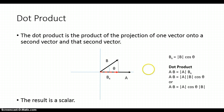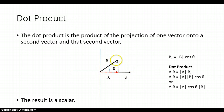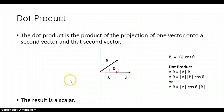Expanding on our equation for the dot product, the dot product of a and b equals the magnitude of a times the magnitude of b cosine of theta. Or we may also write it as the magnitude of a cosine of theta times the magnitude of b. In the first case, we're multiplying the magnitude of a and the projection of b as seen on vector a. In the second, we're multiplying the magnitude of b and the projection of a onto b. In either case, the answer will be correct, and the result is a scalar.